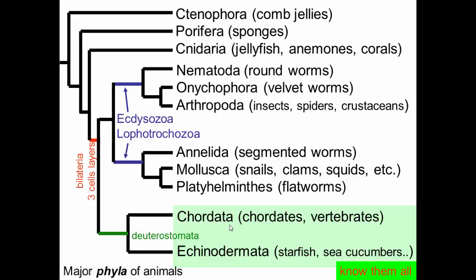In fact, sea urchins are one of the big developmental model organisms because they're actually more closely related to us than other more convenient organisms that we might wish to study instead. So let's look at deuterostomes — first echinoderms and then chordates.